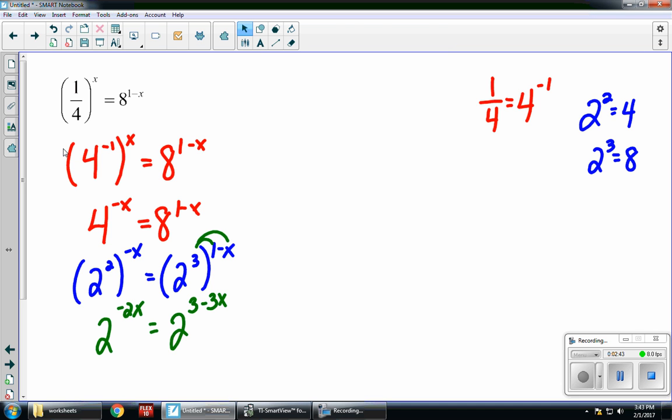Once my bases are the same, they both have 2's, I worry about my exponents only. So my equation is negative 2x equals 3 minus 3x.